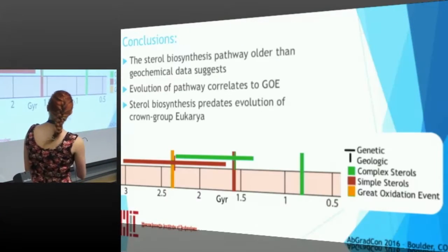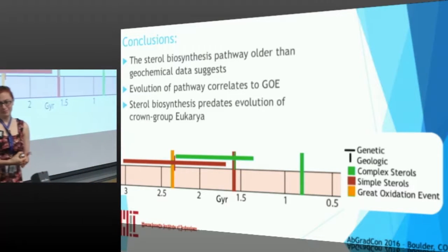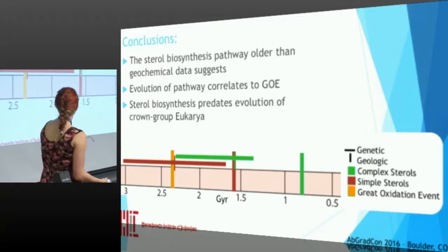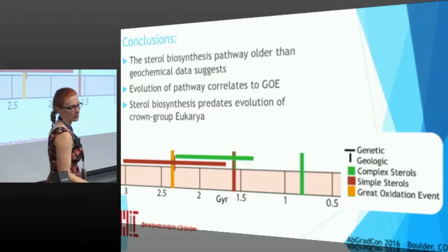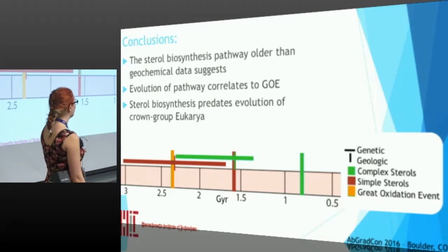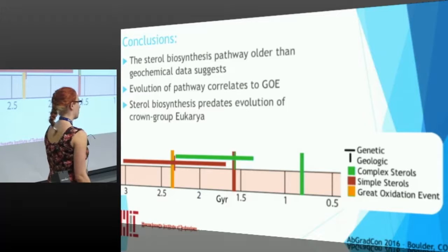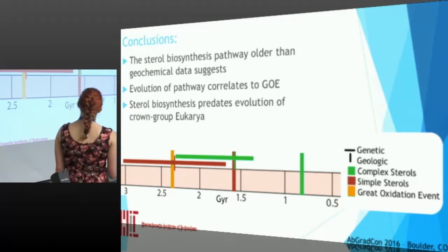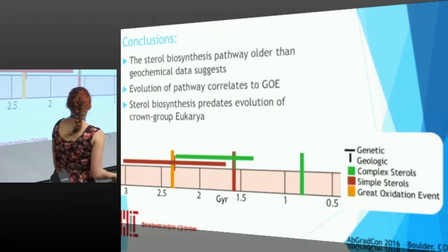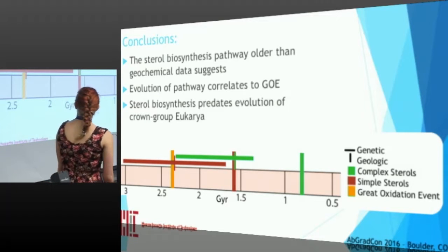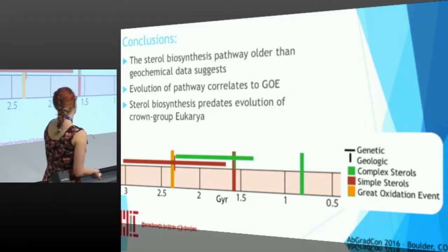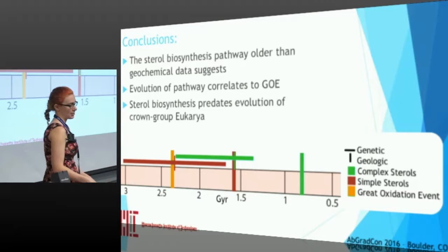In conclusion, the sterol synthesis pathway seems to have evolved much earlier than the rock record suggests. If you look at this chart, the horizontal lines are our predictions and the vertical lines are the first finds in the rock record. The evolution of the pathway correlates with the Great Oxidation Event — so as soon as we have oxygen, we're making these sterols. And sterol biosynthesis predates the evolution of crown group Eukarya and might have been an important pre-adaptation for subsequent eukaryotic radiation.